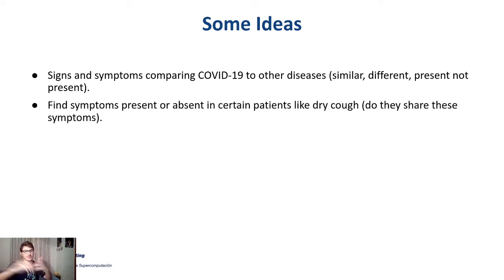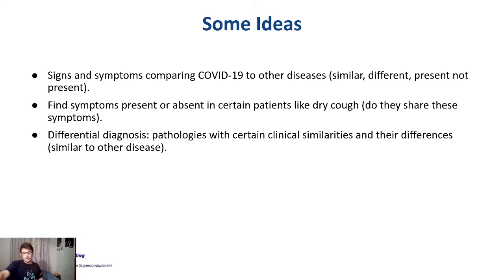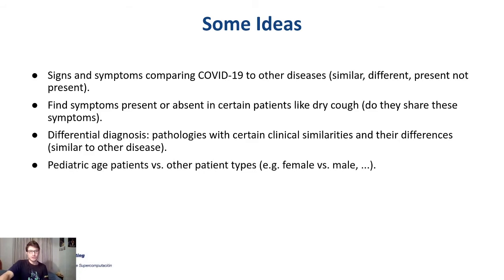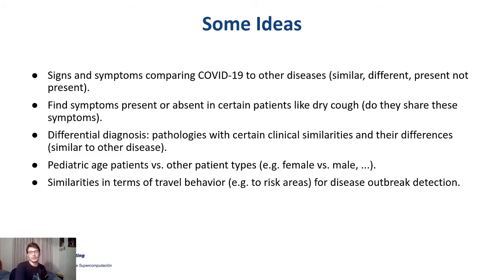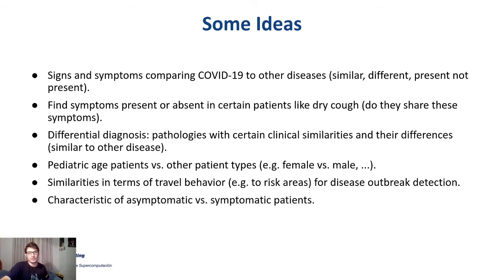You may also try to find whether symptoms in certain patients are present or absent, or do what's called differential diagnosis — comparing whether certain pathologies are similar or different. You might create profiles like pediatric vs. adult patients or female vs. male patients, or see whether there is travel behavior. Another possibility is to use negation to find COVID-19 patients who had no symptoms — were asymptomatic — and compare their characteristics to symptomatic patients.